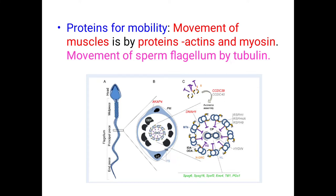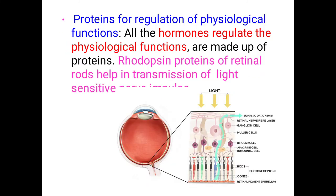Proteins are used for movement of muscles and these proteins are referred to as actins and myosins. Similarly, the movement of flagellum in sperm is maintained by tubular proteins. Proteins are also widely synthesized in the body to regulate different physiological processes — collectively called hormones, most of which are chemically made up of proteins. We also find rhodopsin proteins in the retinal cells of the eye, which help in transmitting light-sensitive nerve impulses during dark conditions.